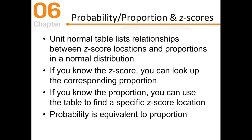The unit normal table lists relationships between z-score locations and proportions in a normal distribution. If you know the z-score, you can look up the corresponding proportion. Conversely, if you know the proportion, you can find the z-score — you can read the table from right to left and left to right. Probability is mathematically equivalent to proportion.